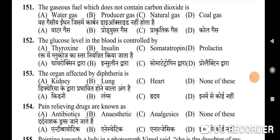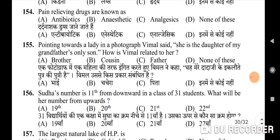154th question: pain-relieving drugs are known as — correct option is C: analgesics. 155th question: pointing towards a lady in a photograph, a female said 'she is the daughter of my grandfather's only son'; how is the female related to her — correct option is A: brother. 156th question: Sudha's number is 11th from downward in a class of 34 students; what will be her number from upwards — correct option is C: 21st.